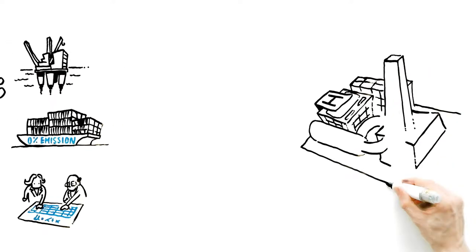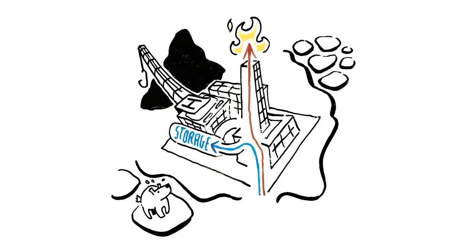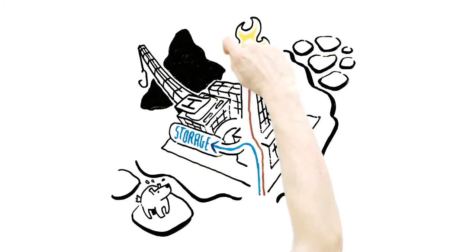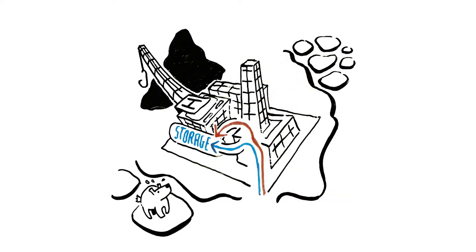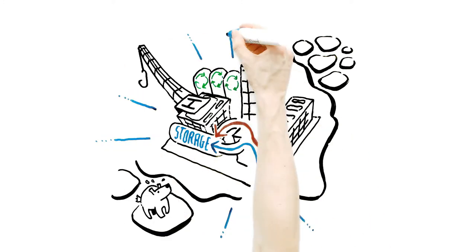We can do two things to reduce emissions. One, limit flaring of surplus gas in the oil industry. Two, overhaul old energy production facilities.